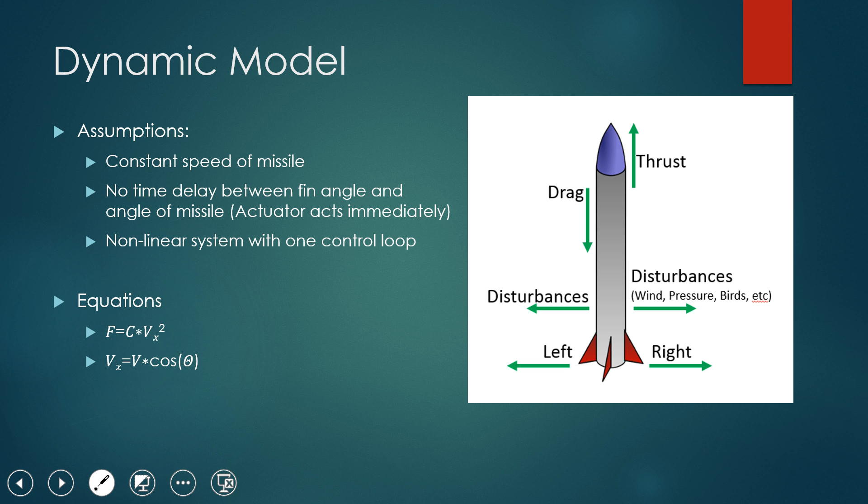And then we're also assuming that there's no time delay between the fin angle and the angle of the missile. So basically the actuator works so quickly that as soon as we change the fin angle, we can assume that the missile is already going in that direction.